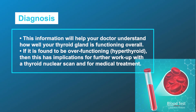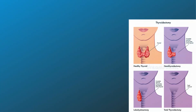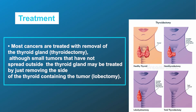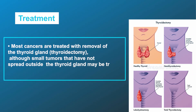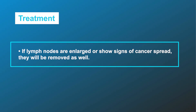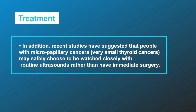Regarding treatment: most cancers are treated with removal of the thyroid gland (thyroidectomy), although small tumors that have not spread outside the thyroid gland may be treated by just removing the side of the thyroid containing the tumor (lobectomy). If lymph nodes are enlarged or show signs of cancer spread, they will be removed as well. Recent studies have suggested that people with micropapillary cancers — very small thyroid cancers — may safely choose to be watched closely with routine ultrasounds rather than have immediate surgery.